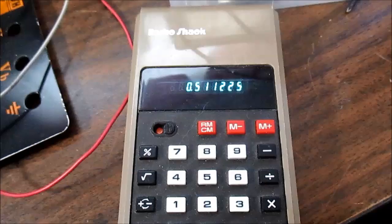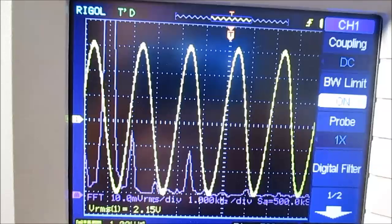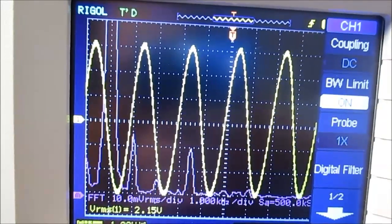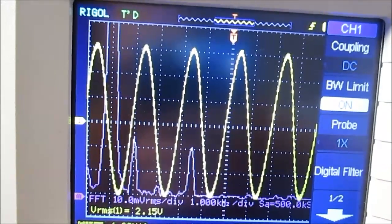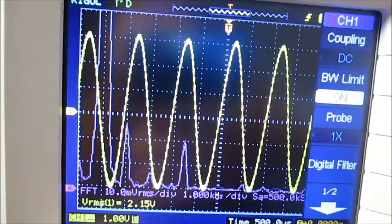Now we'll check out nine volts. Okay, we're at nine volt supply and it's putting out two point one five volts RMS. That calculates to one point one six watts.